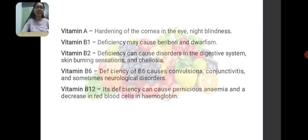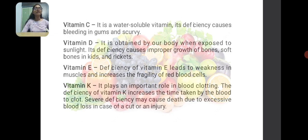Deficiency of vitamin B6 causes convulsions, conjunctivitis, and neurological disorders. Deficiency of vitamin B12 causes pernicious anemia, which is a decrease in RBC and hemoglobin.